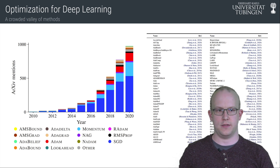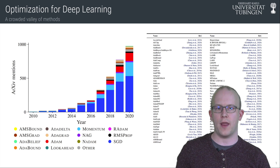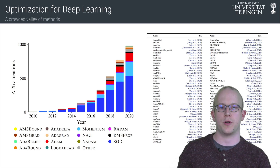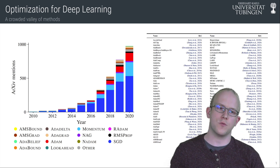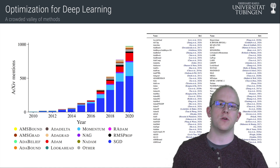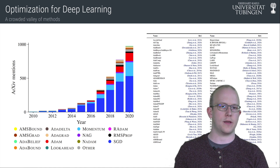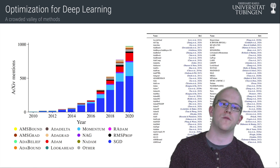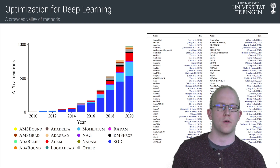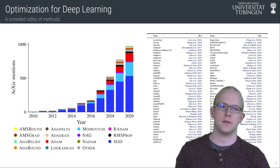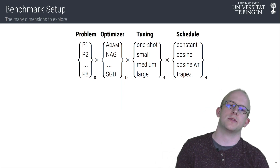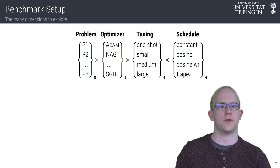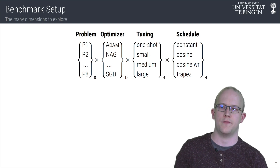Unfortunately there is little theoretical insight that would rank these methods, and the only empirical evidence is provided by the original works. As a result, there is an often unclear and ever-changing state of the art when it comes to deep learning optimizers, occasionally driven more by hype and social media than grounded evidence. Therefore we conducted a large-scale optimizer benchmark to ground the debate on independent third-party empirical evidence.